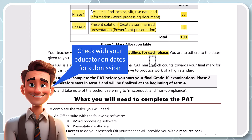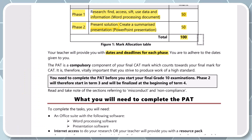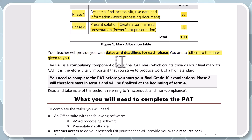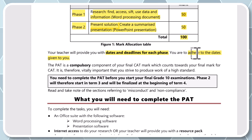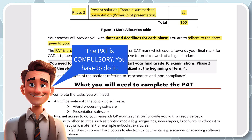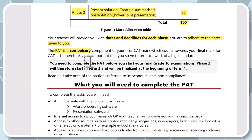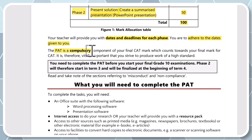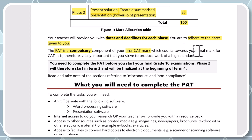Check with your teacher when each phase's deadline is, and adhere to those dates. You cannot come to the teacher on the deadline saying you didn't save, your PAT is gone, or you lost your memory stick. The PAT is compulsory — Grade 10, you cannot say to the teacher you don't feel like doing it. The subject requires you to do a PAT. It's not by choice. It forms part of your final CAT mark which counts towards your final mark, so it is vitally important.